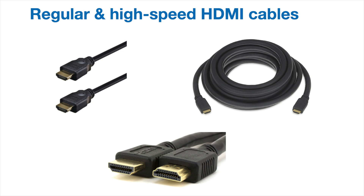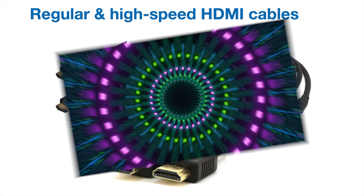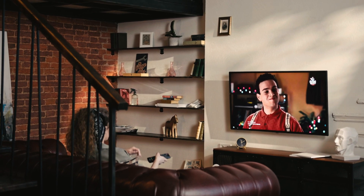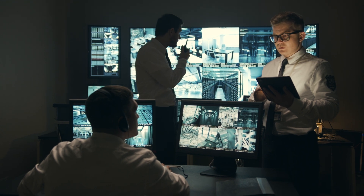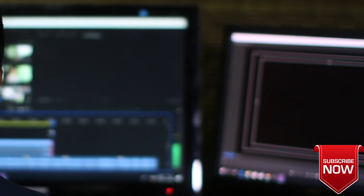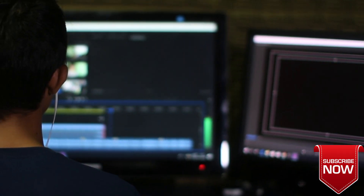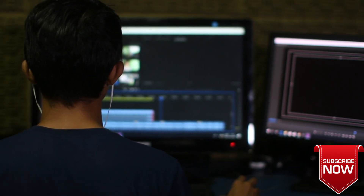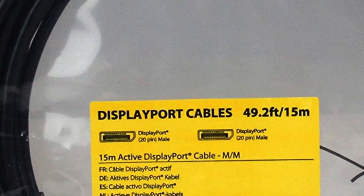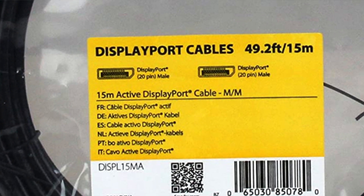Regular and high-speed HDMI cables are used to carry digital audio, video, and control signals between a source and destination, used in conjunction with an HDMI input and output. DisplayPort, or DP for short, is an audio and video interface originally intended to replace older video interfaces like DVI and VGA. DisplayPort is primarily used by desktop computers, laptops, and projectors. There are passive and active DP cables, which will be covered in another video.